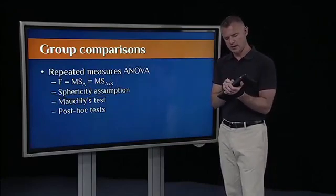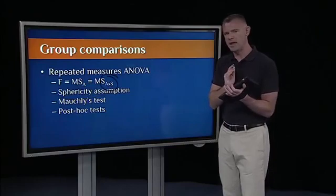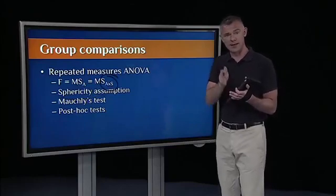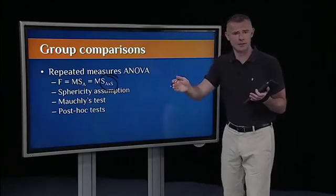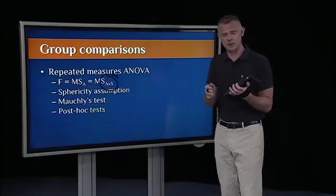So, it's the interaction of A by S, or it's the inconsistent subject effect across conditions. That's the concept of interaction. That's the key difference in a repeated measures ANOVA.